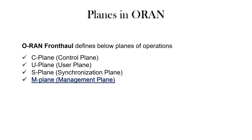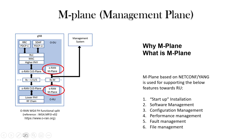The planes defined in ORAN fronthaul are: Control Plane, User Plane, S-plane, and M-plane. Today we will discuss the Management Plane in detail, and in future videos we will cover C-plane, U-plane, and S-plane. The management plane spec is around 150 pages in Working Group 4, and we will discuss it chapter by chapter.